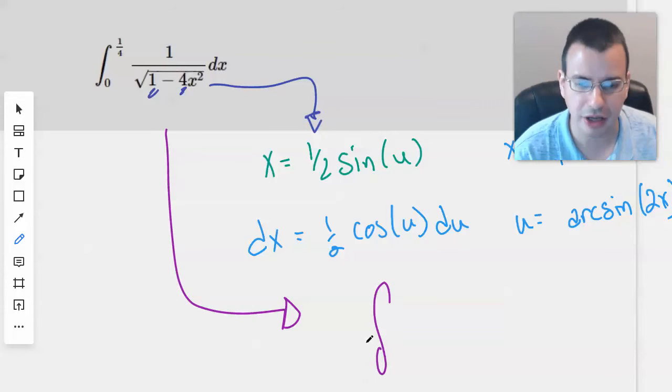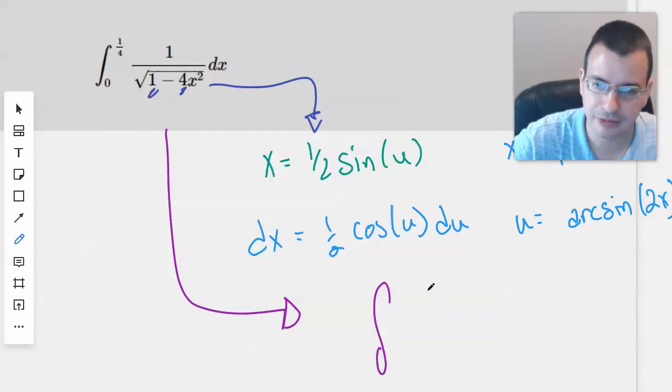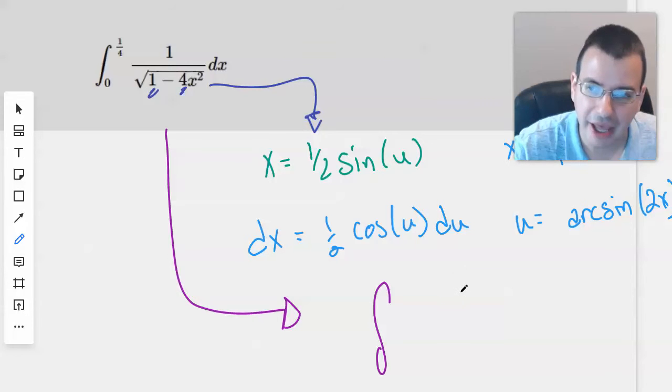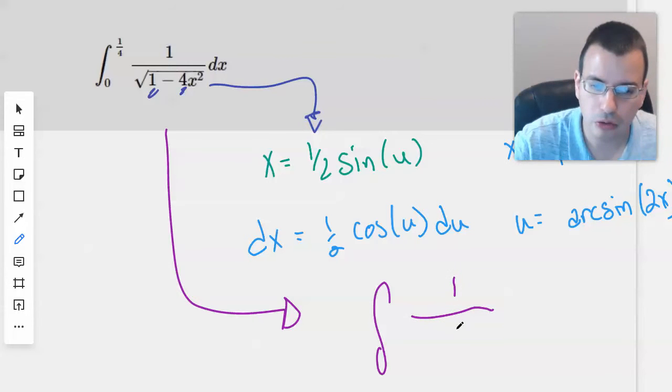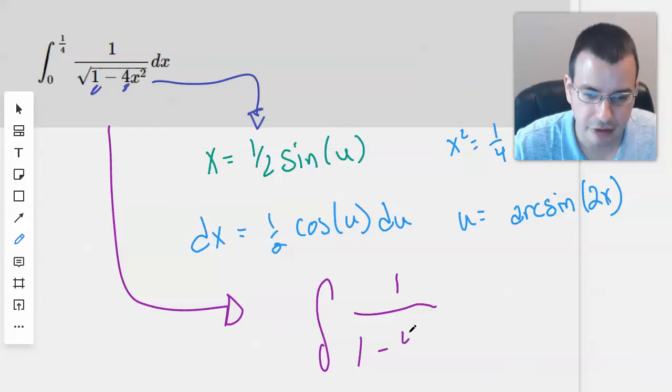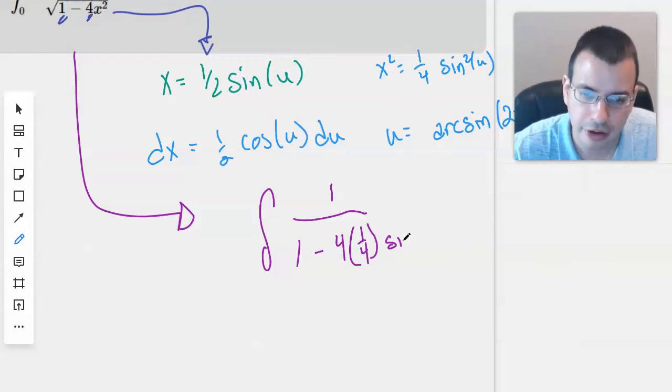Okay. So we'll have the integral. I'll leave off the limits of integration. That way I don't have to do the conversion yet. I'll go back to x before I actually solve the problem. We have one over one minus four x squared.